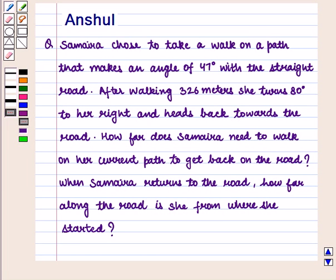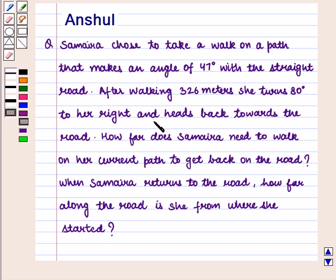Hello and welcome to the session. In this session we are going to discuss the following question: Samaira chose to take a walk on a path that makes an angle of 47 degrees with the straight road. After walking 326 meters, she turns 80 degrees to her right and heads back towards the road. How far does Samaira need to walk on her current path to get back on the road? When Samaira returns to the road, how far along the road is she from where she started?